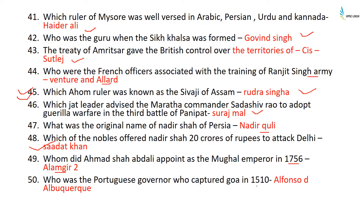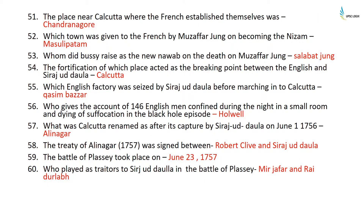The Treaty of Amritsar gave the British control over territories of Cis-Sutlej. The French officers associated with training Ranjit Singh's army were Ventura and Allard. The Ahom ruler known as the Shivaji of Assam was Rudra Singh. The Jat leader who advised the Maratha commander Sadashiv Rao to adopt guerrilla warfare in the Third Battle of Panipat was Surajmal. The original name of Nadir Shah of Persia was Nadir Kuli. The noble who offered Nadir Shah 20 crore rupees to attack Delhi was Sadat Khan.